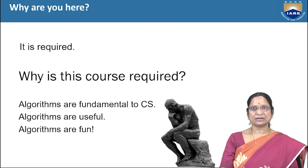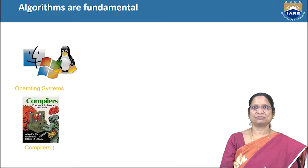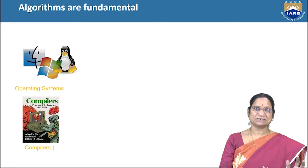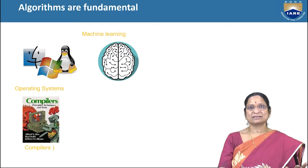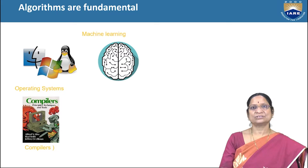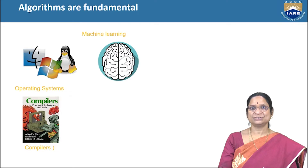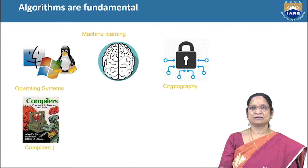Algorithms are fundamental to computer science — they are very useful and fun, and help us explore our thought processing effectively. Related to computer science specifically: operating systems consist of various algorithms such as scheduling algorithms, job sequencing algorithms, and processor scheduling algorithms. In machine learning, supervised and unsupervised algorithms are used to give machines a certain level of intelligence.